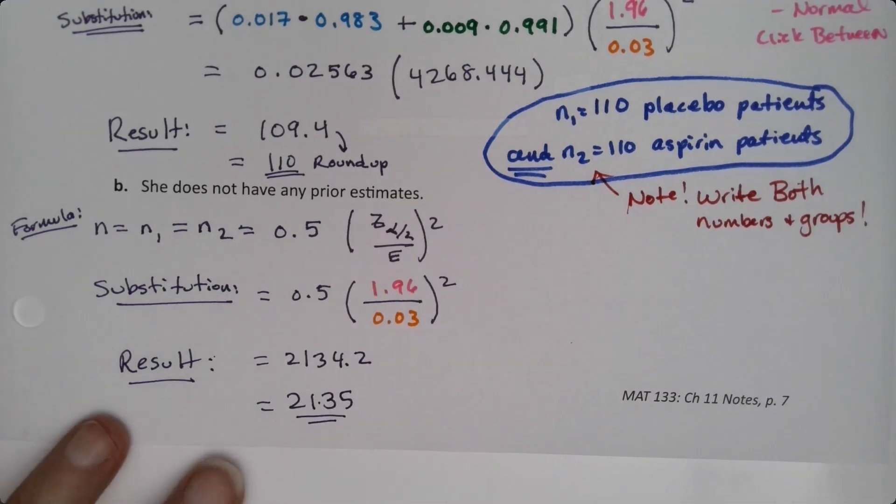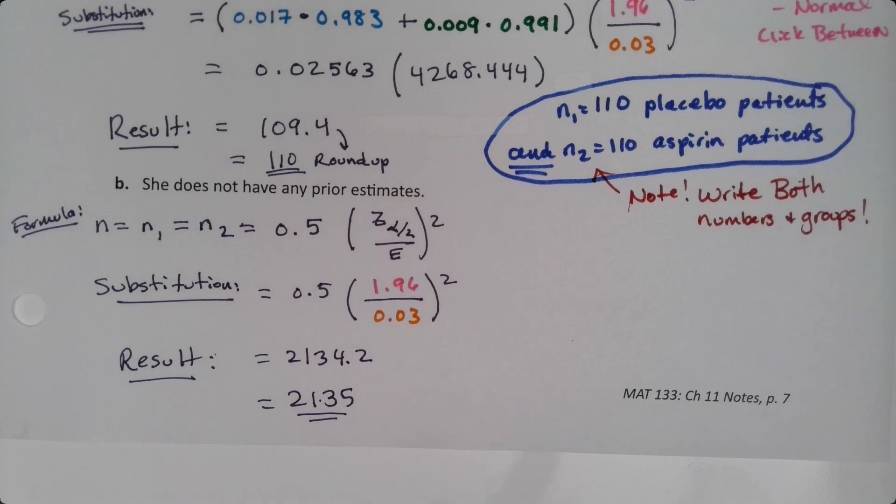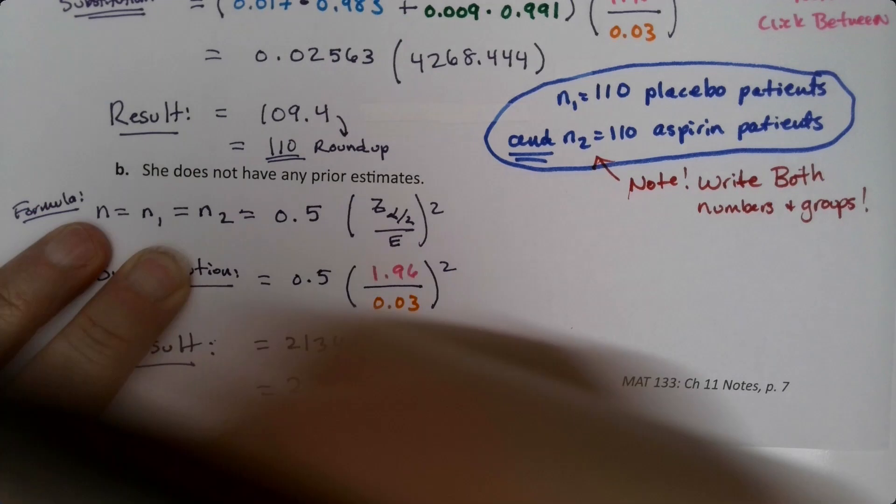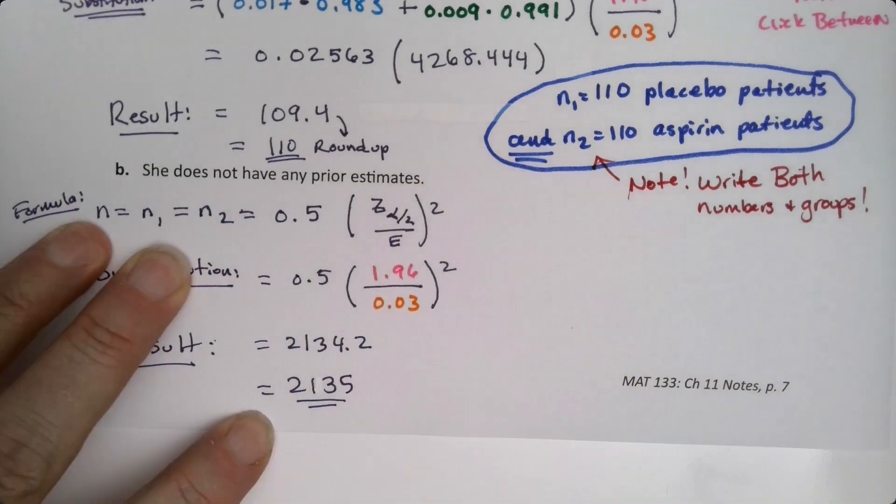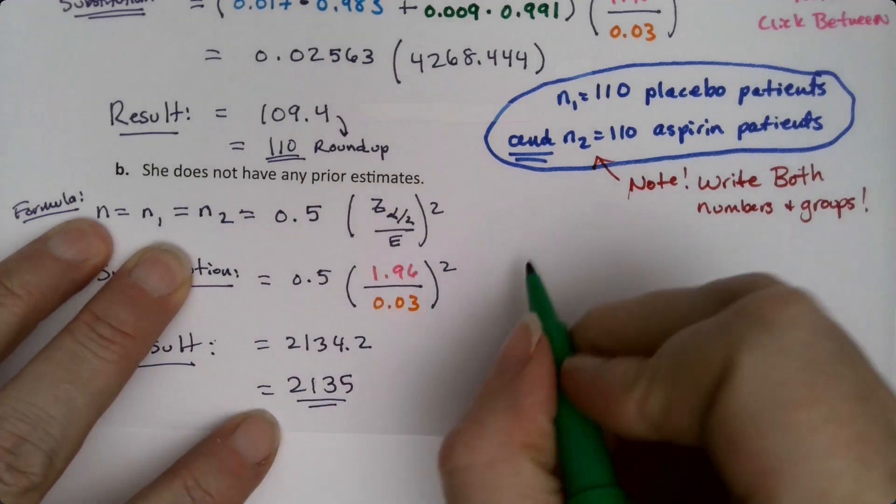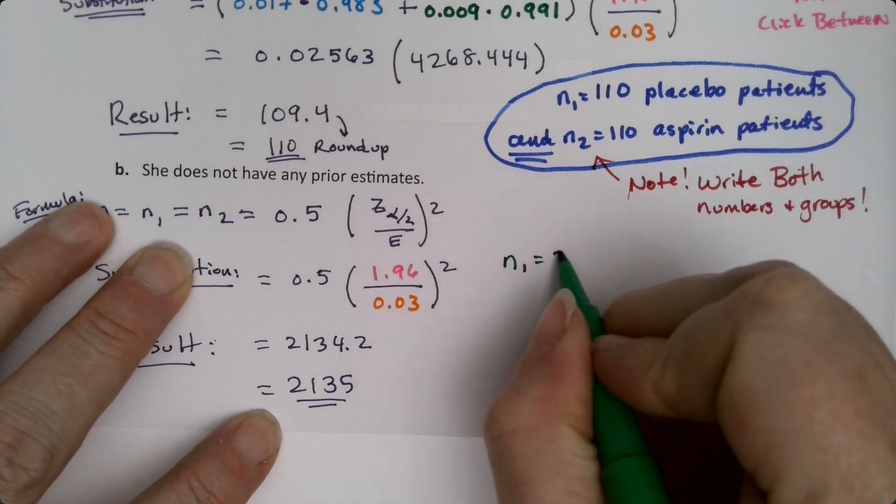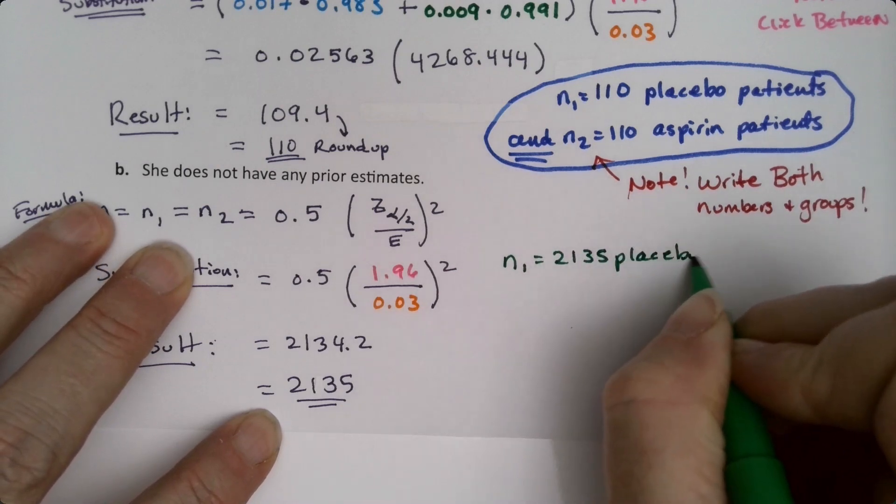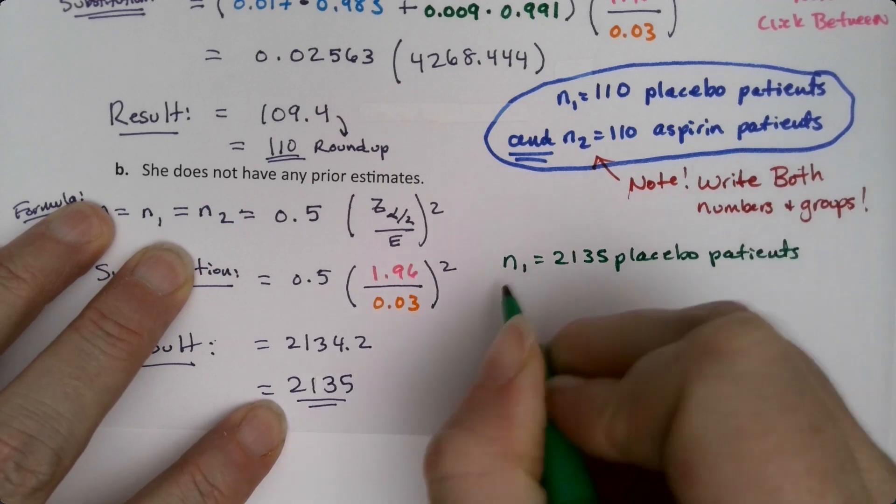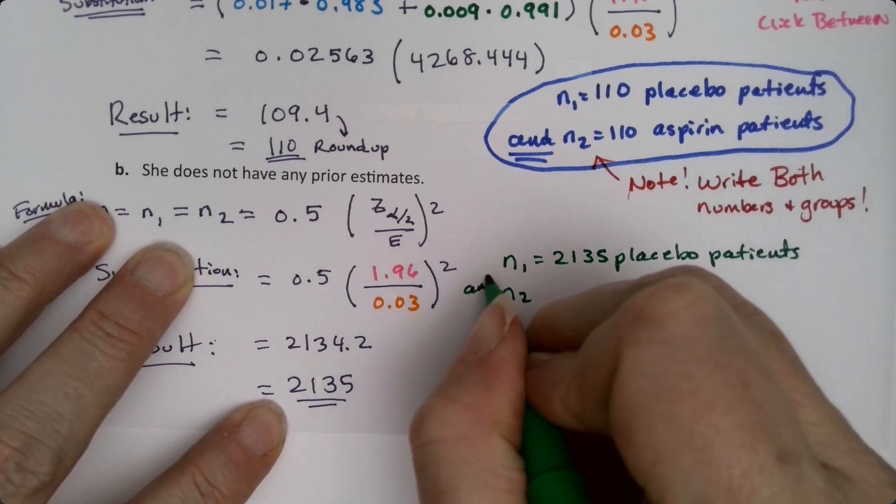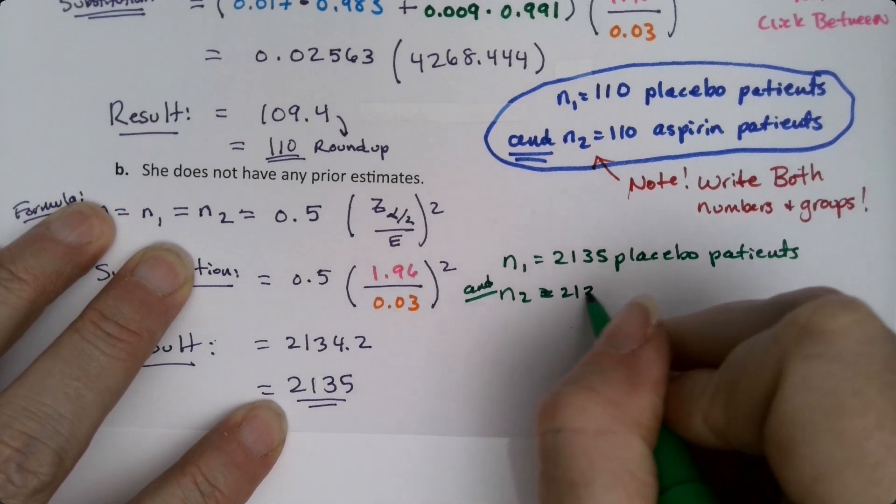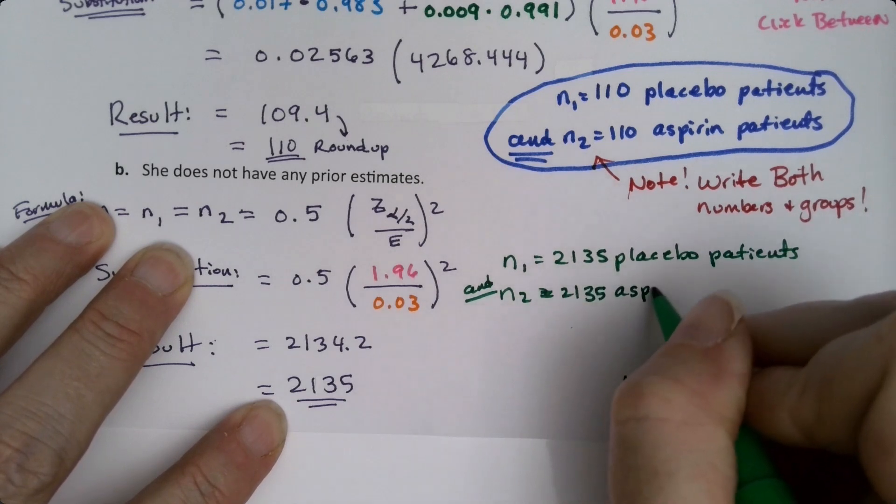So now, just as before, it's really 2135. Sorry, that looks like a decimal point, but it isn't. My pen touched there. Alright. So we need N1 to be 2135 placebo patients. And N2, we need both, is 2135 aspirin patients.